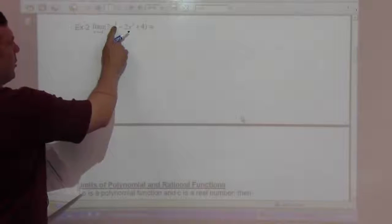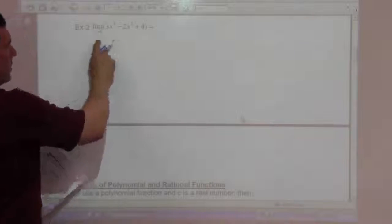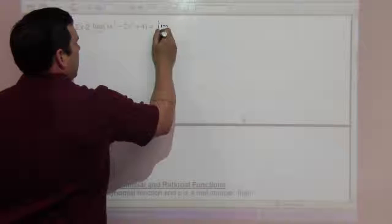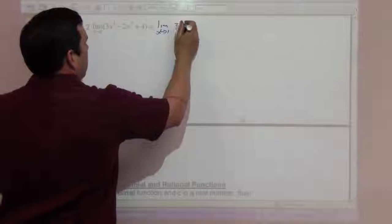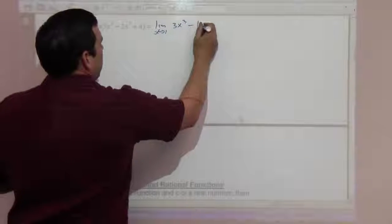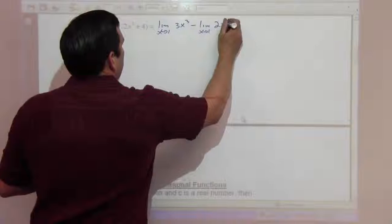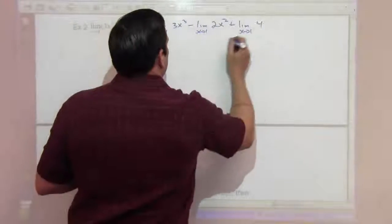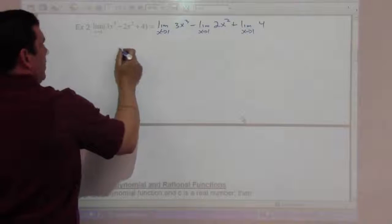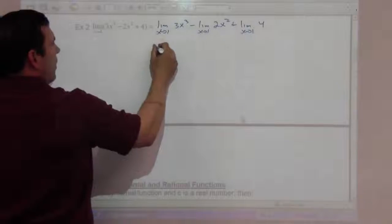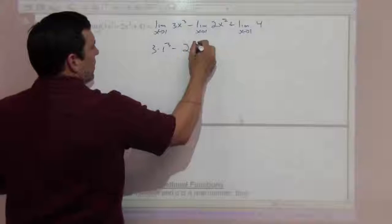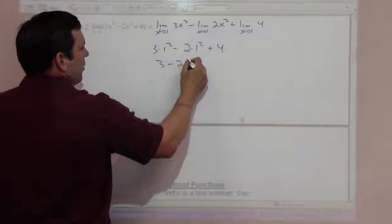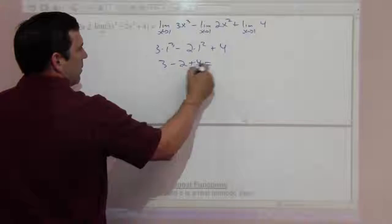The limit as x goes to 1 of 3x cubed minus 2x squared plus 4. That's the limit as x goes to 1 of 3x cubed, minus the limit of 2x squared, plus the limit of 4 — which gives us 3 times 1 cubed minus 2 times 1 squared plus 4. That's 3 minus 2 plus 4, which equals 5.